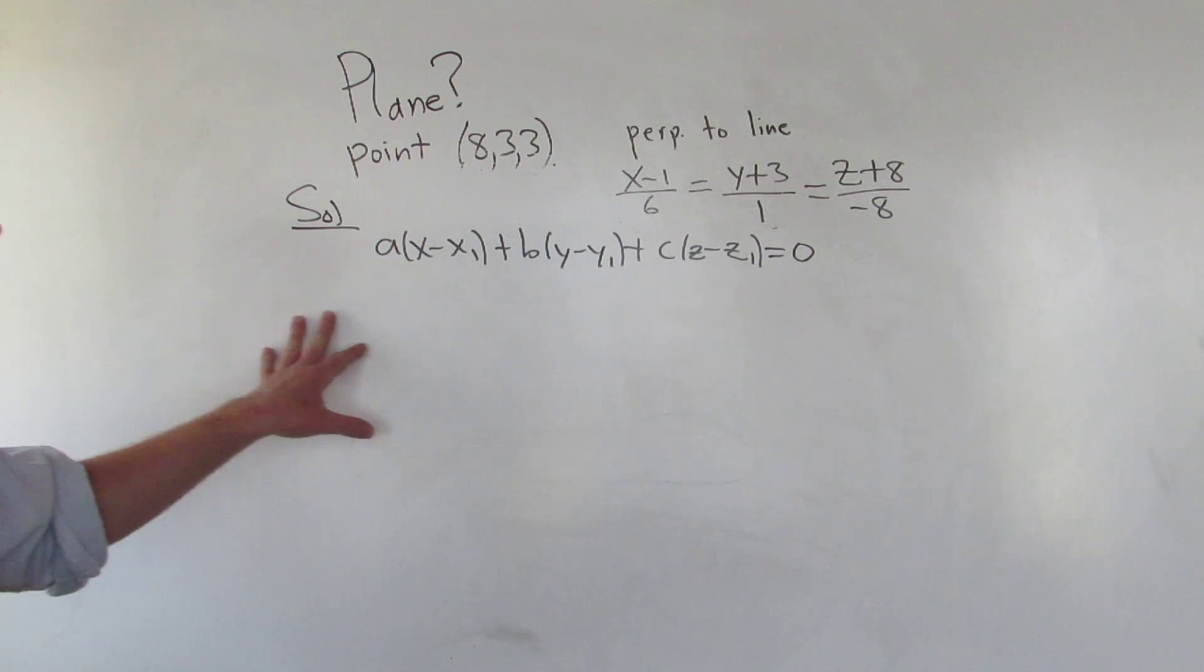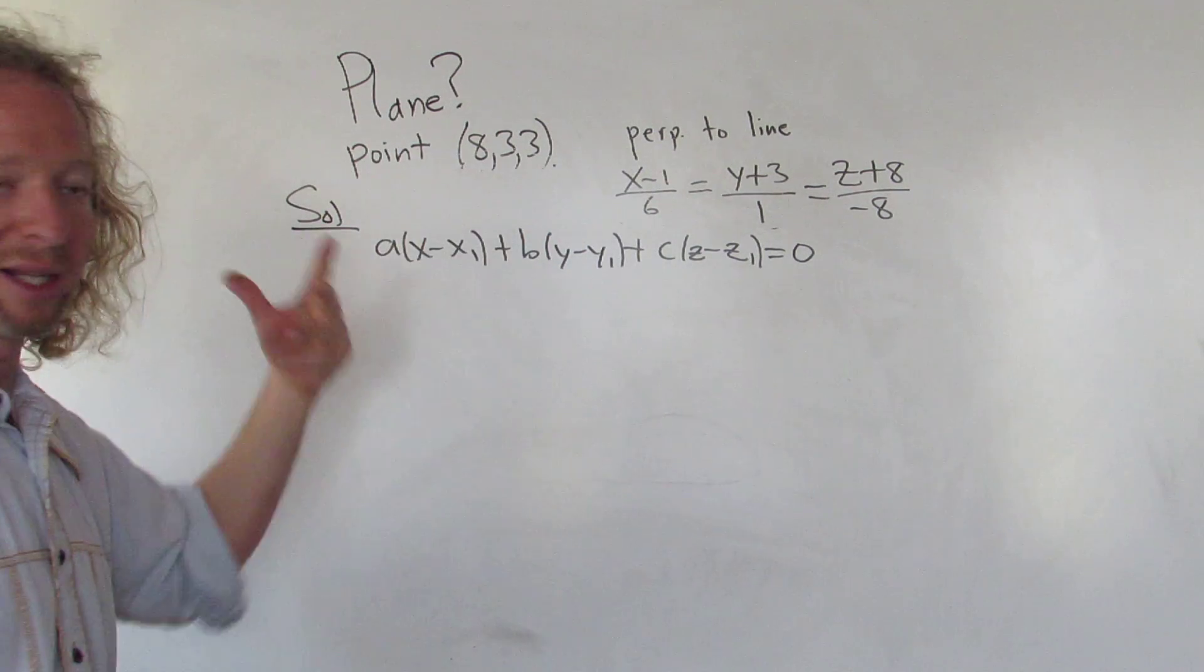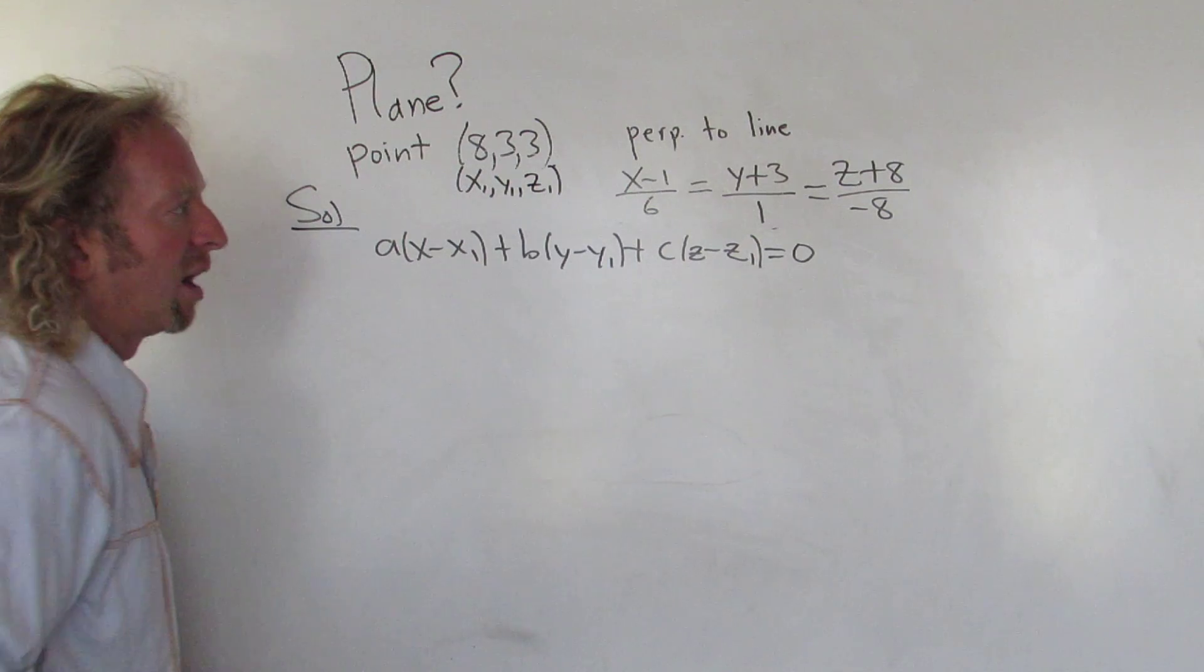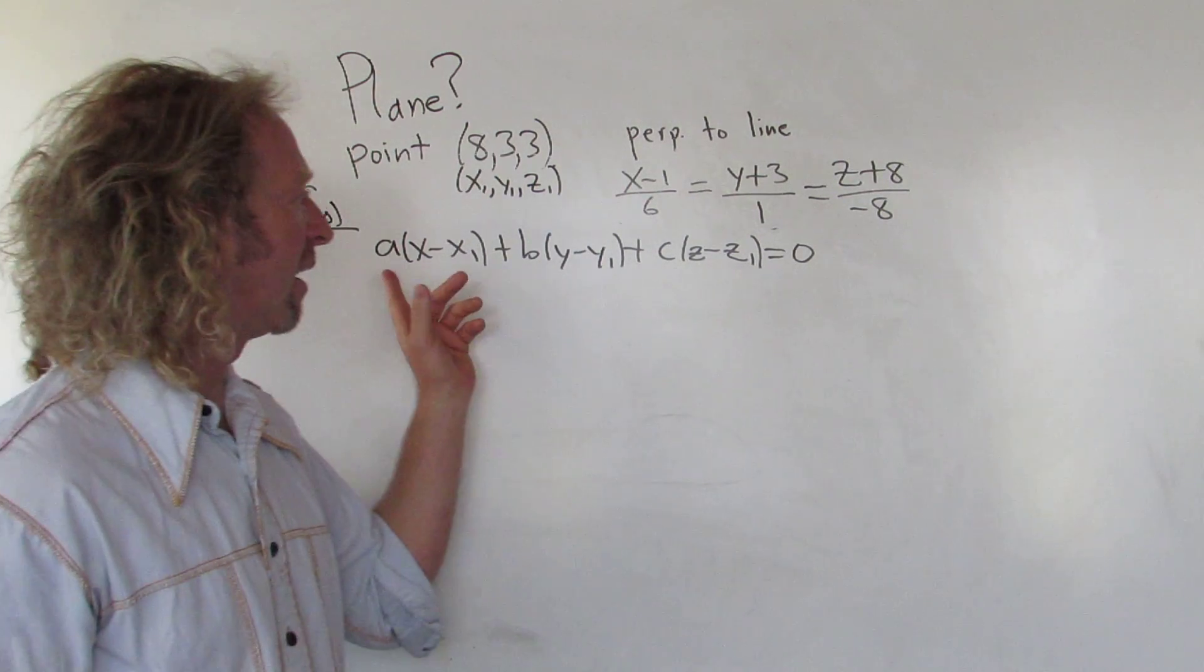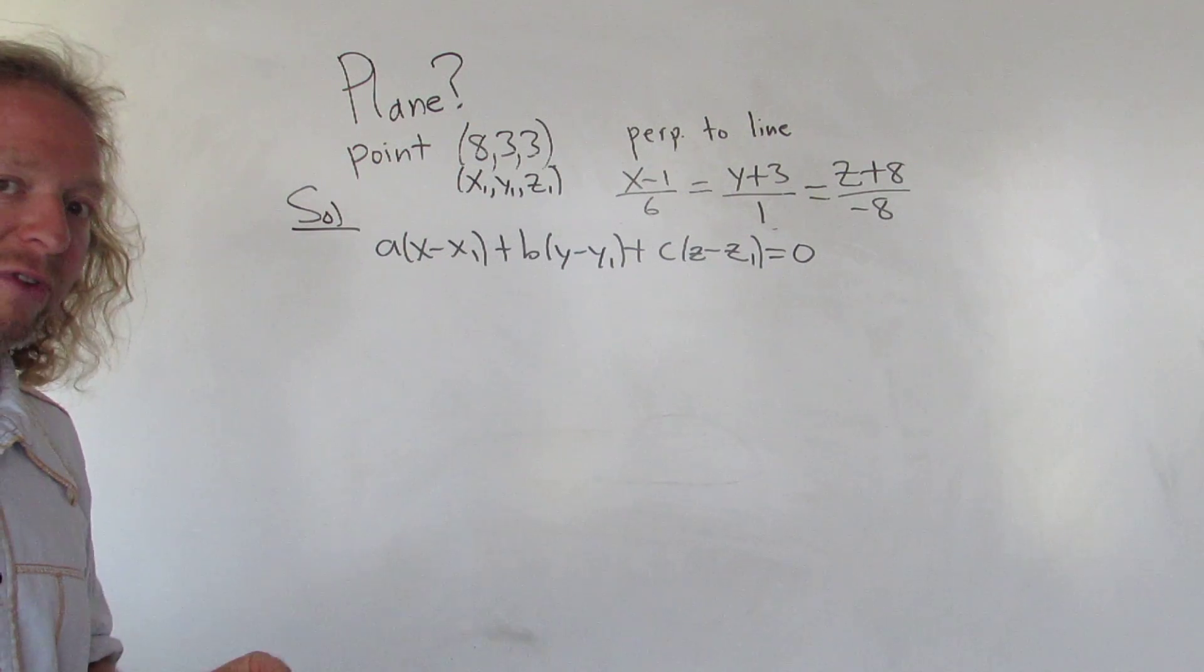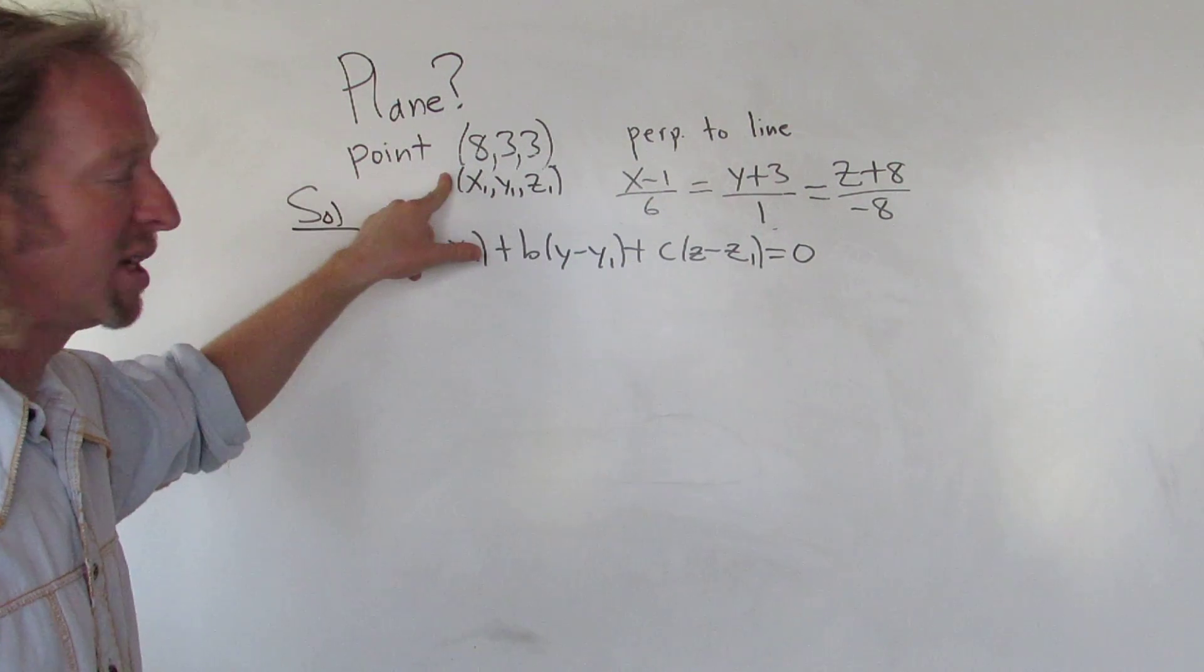In this formula, this is the formula for the equation of a plane. Our x1, y1, z1 is a point that lies in our plane. So in this case it's just these numbers here, really simple. The tricky part is to find ABC. ABC are the components for our normal vector. So the vector ABC is perpendicular to our plane.